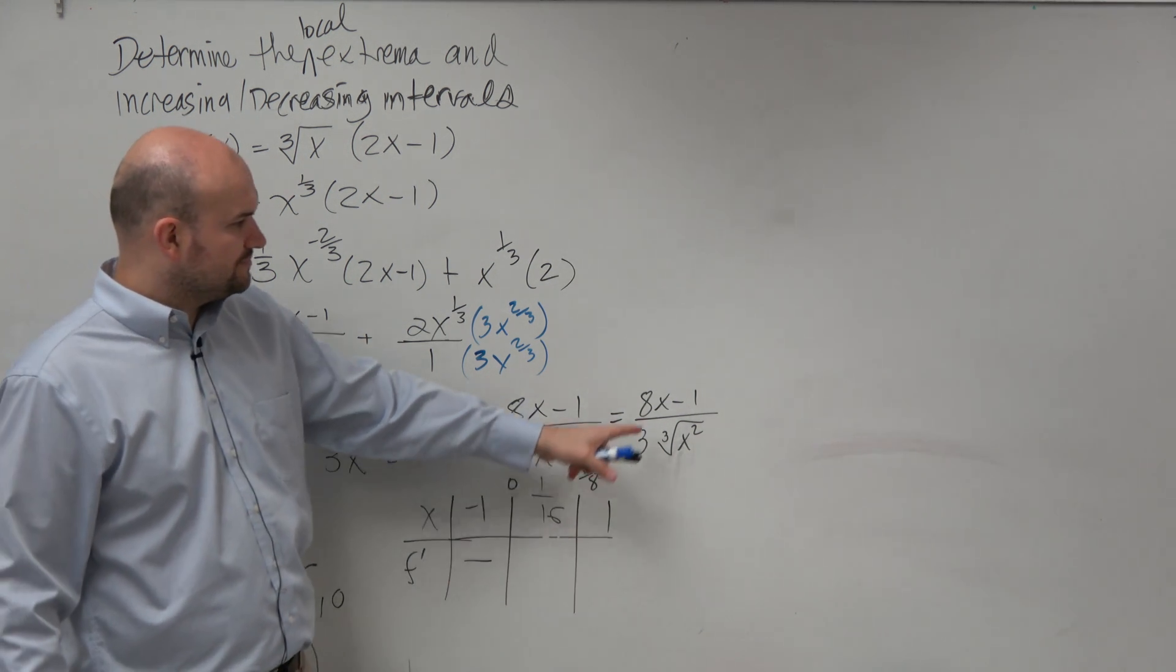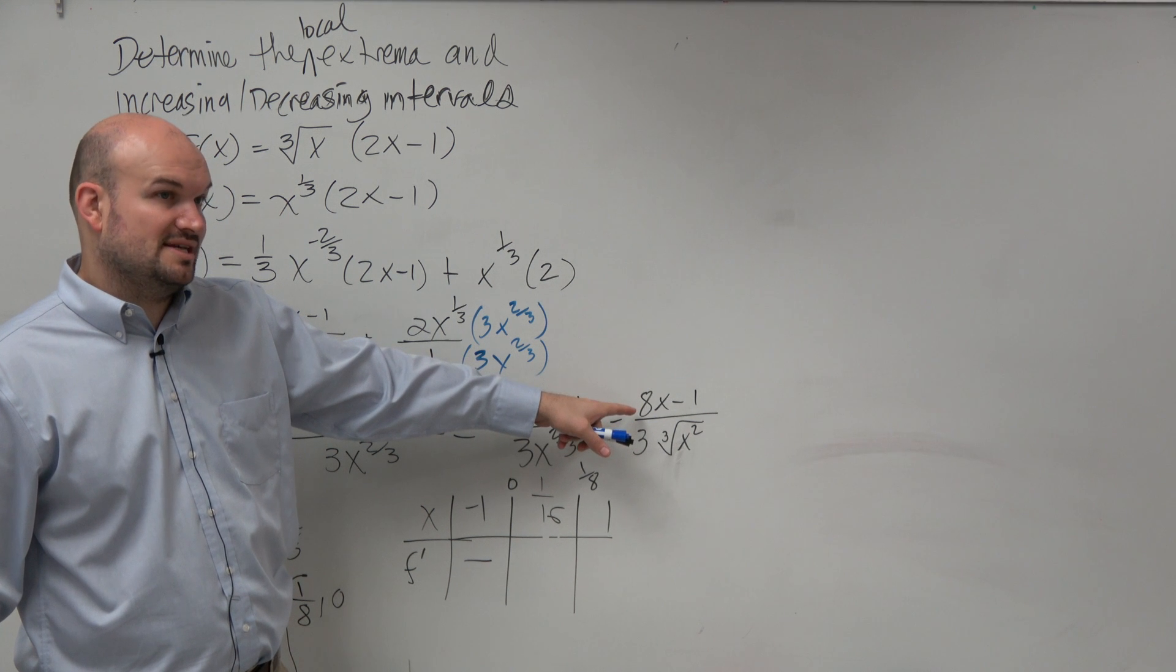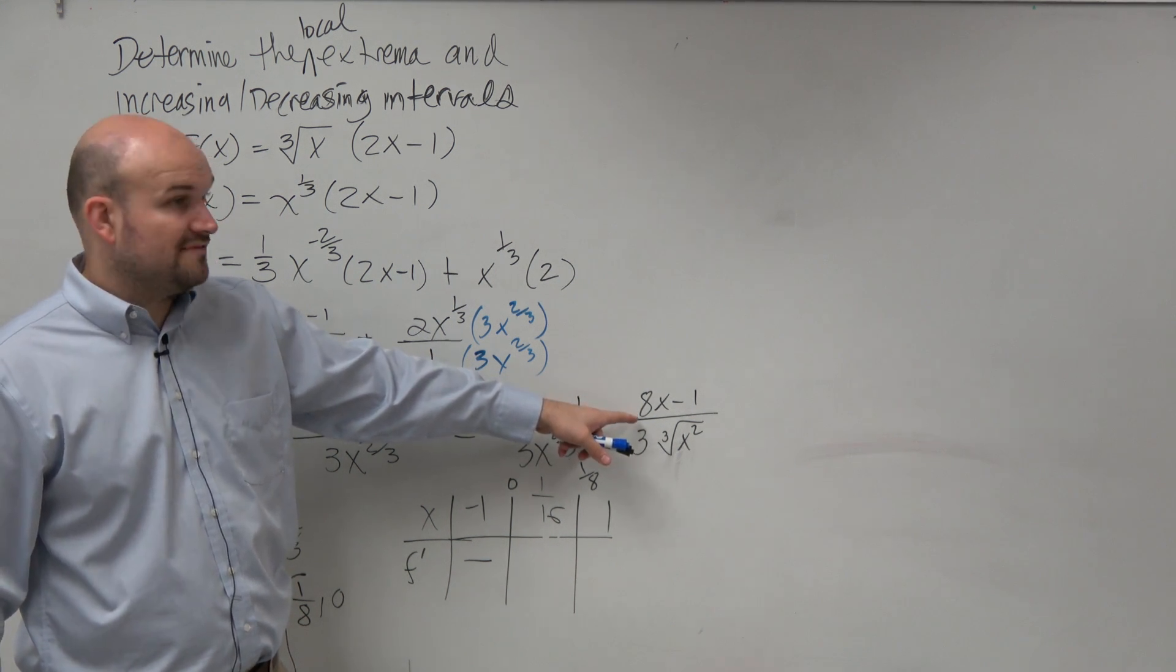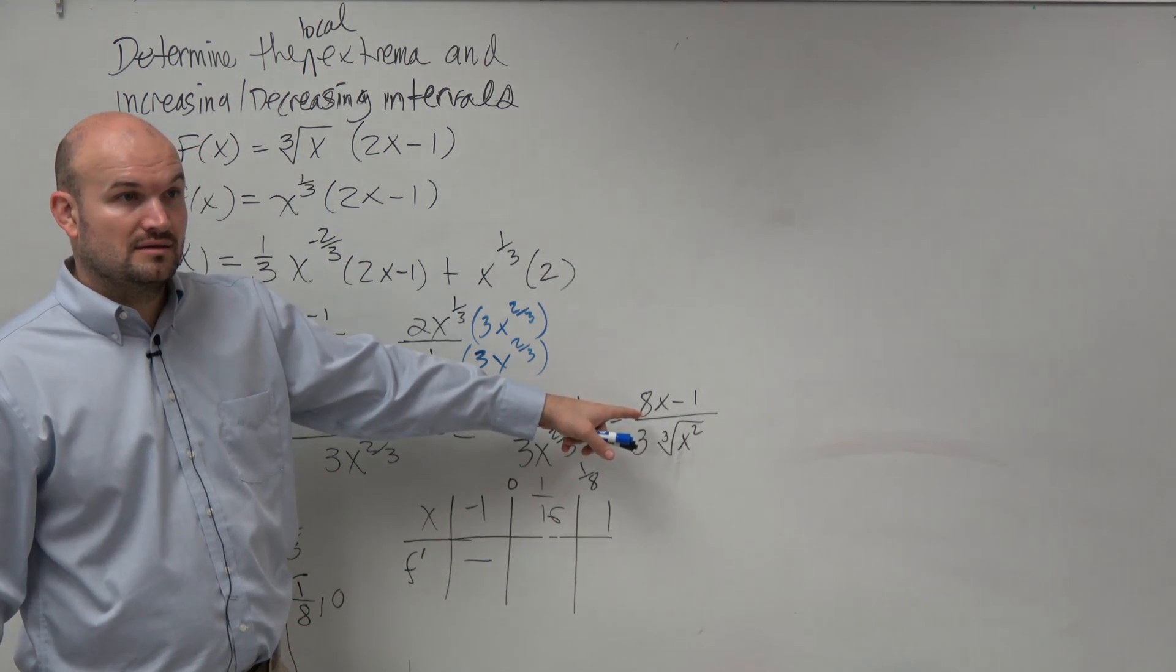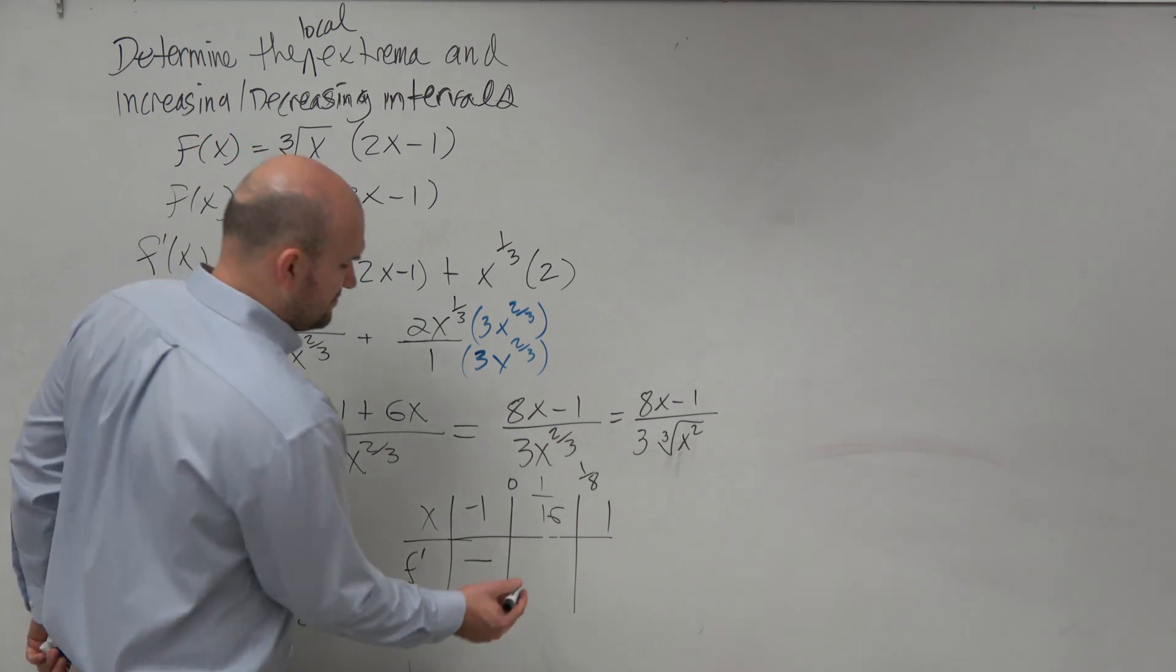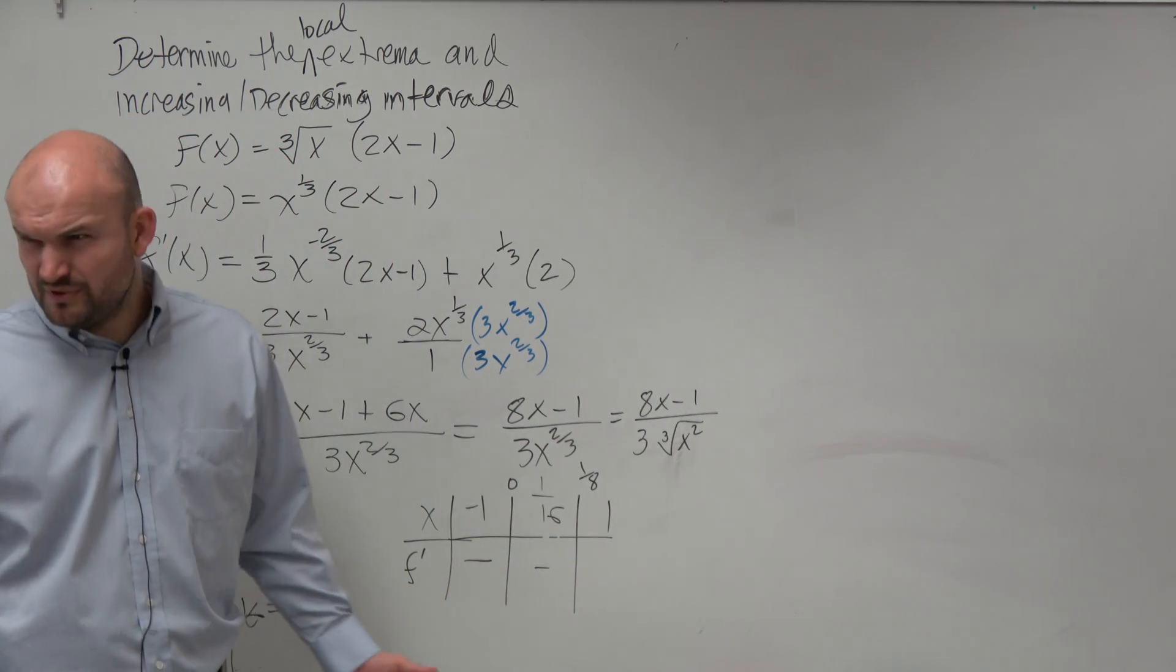Let's plug in 1/16. 1/16, 8 over 1/16 is 1/2. 1/2 minus 1 is negative. Dang it. Two negatives in a row. Did we really do it correctly?